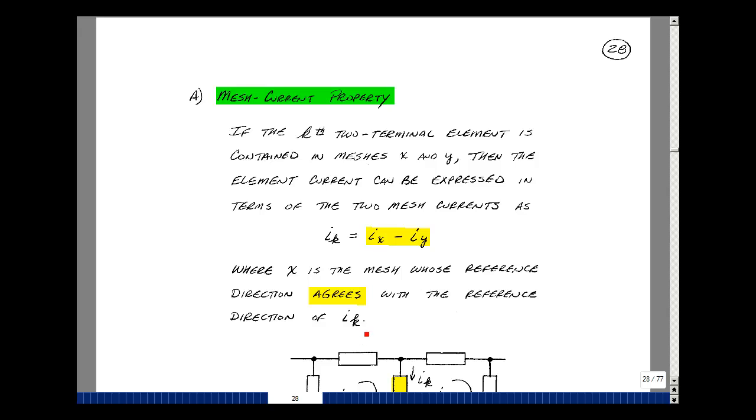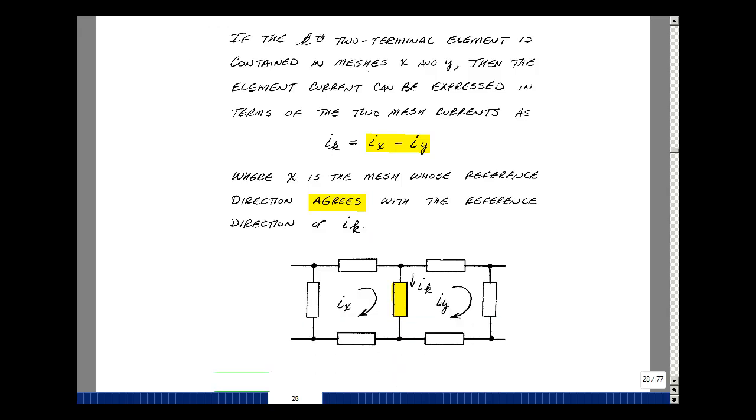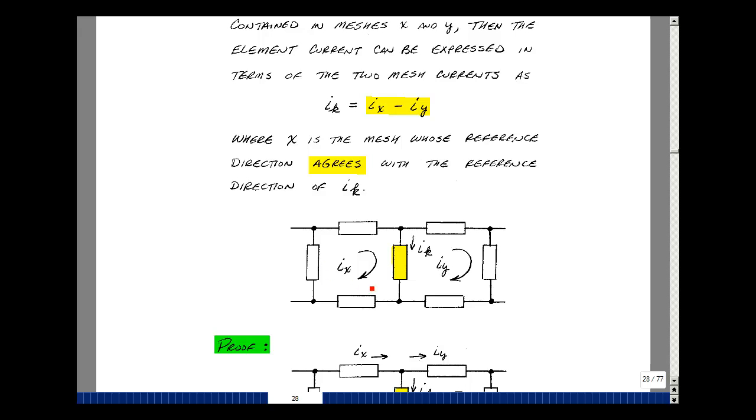Let's take a look at a picture to see what that actually means. So here I've got a mesh current I sub x, and a mesh current I sub y, and we're going to usually assign these in a clockwise direction. I want to solve for the current I sub k. What this property is saying is that I sub k is equal to I sub x minus I sub y. I sub k is in the same direction as I sub x, and I sub y is in the opposite direction. So we're going to take I sub x minus I sub y.